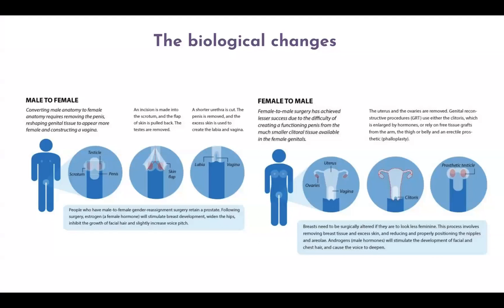The next step is to understand the biological changes people undergo in sex reassignment surgery. For male-to-female, it basically requires removing the penis, reshaping the genital tissue to appear more feminine, and constructing a vagina. An incision is made into the scrotum, the flap of skin is pulled back, and the testes are removed. A shorter urethra is then cut. It is very important to recognize that people who undergo male-to-female gender reassignment surgery retain a prostate. Following the surgery, estrogen is prescribed, which will stimulate breast development, widening of the hips, inhibiting the growth of facial hair, and slightly increasing the pitch of the voice.